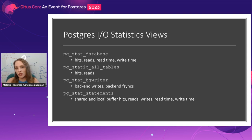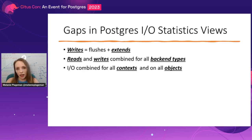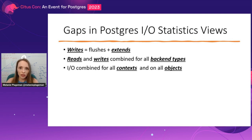PGStat database gives you per-database statistics on reads, writes, hits, and read and write time. There's PGStat tables and indexes, there's PGStat BGWriter, and many users are using the PGStat statements extension, which gives you a fair amount of information. But we wanted to add PGStat.io because there are actually substantial gaps in these existing IO statistics in Postgres — we needed to make changes not just to what we're revealing, but to what we're actually collecting.